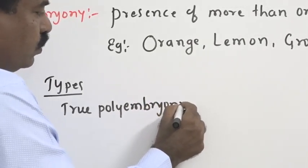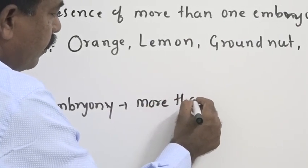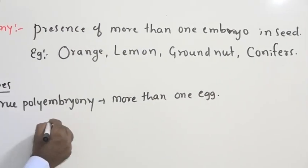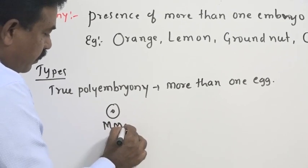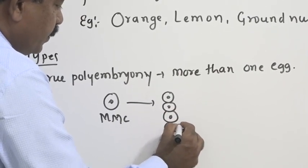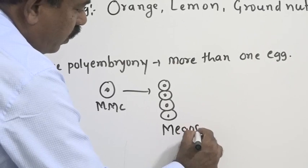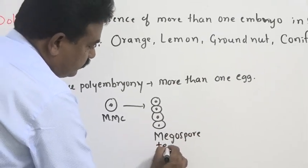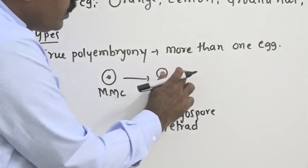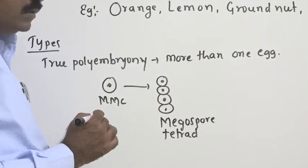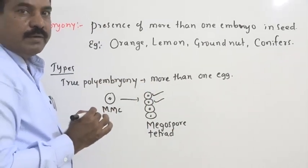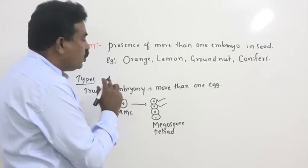In true polyembryony, more than one egg is produced. Then how it is possible? We know the megaspore mother cell, during a meiosis, it produces four megaspores. We call megaspore tetrad. In most of the plants, three megaspores undergo disintegration, one will develop into female gametophyte. Suppose, if two megaspores develop, we will get two female gametophyte, two eggs. At that time, true polyembryony exists.